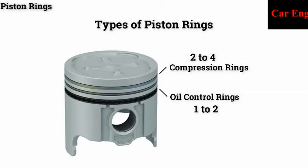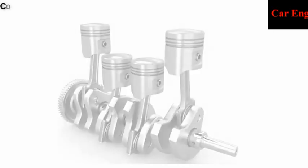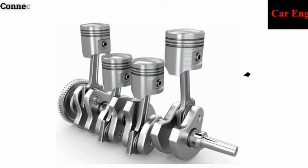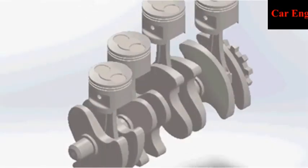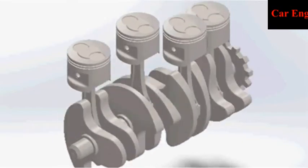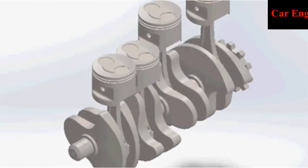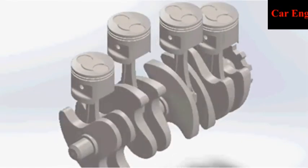The connecting rod is fitted in between the piston and crankshaft. The main function of the connecting rod is to convert the reciprocating motion of the piston into the rotary motion of the crankshaft.